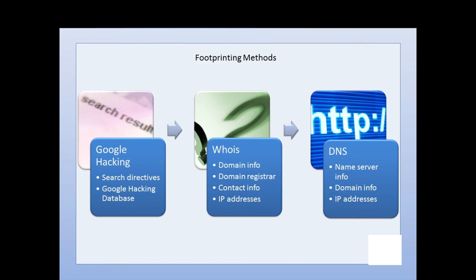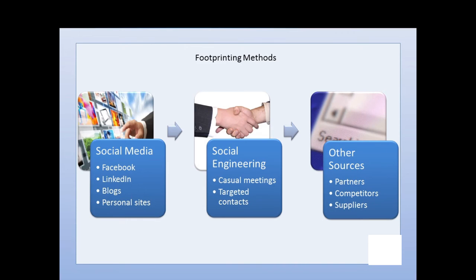DNS footprinting will give you information about the company's name server structure, internal and external DNS, domain information, IP addresses, and potentially information about their internal servers. Social media is another great source — this involves watching social media accounts like blogs, Facebook, LinkedIn, and personal sites that belong to the organization's employees. You can get a lot of information about the organization or the individual through social media.